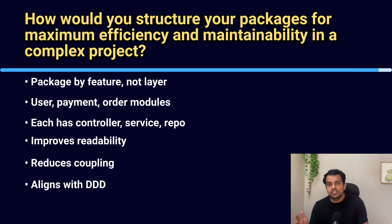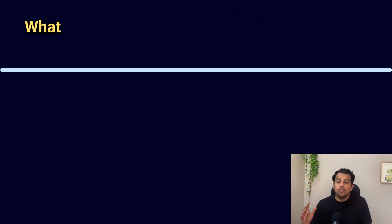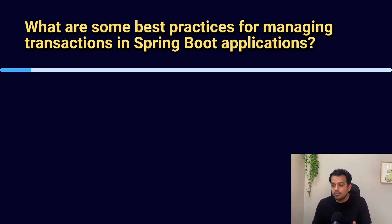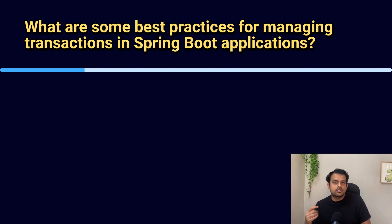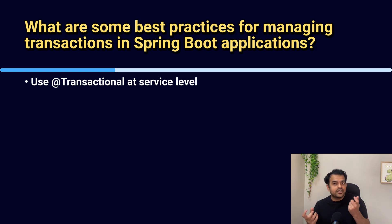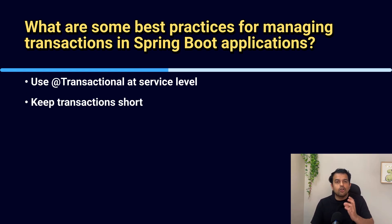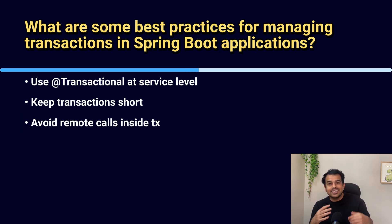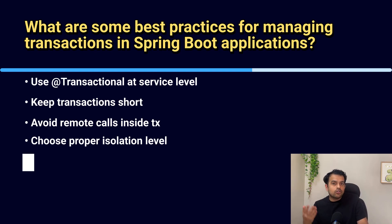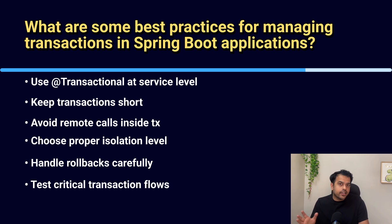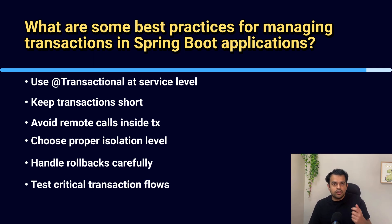Next question: what are best practices for managing transactions in a Spring Boot application? Use the @Transactional annotation at the service level and keep transactions short to avoid locking issues. Avoid calling remote services inside a transaction. Use proper isolation levels based on business needs. Handle rollbacks carefully — both checked and unchecked exceptions. Test the critical transactional flow thoroughly.